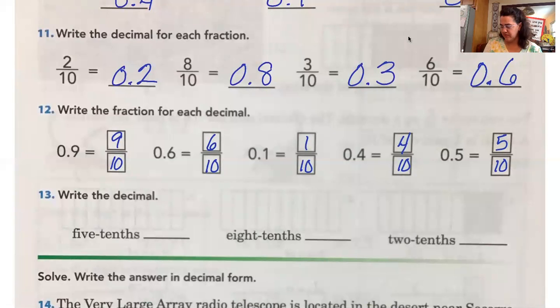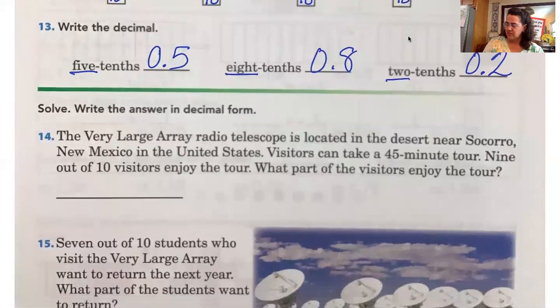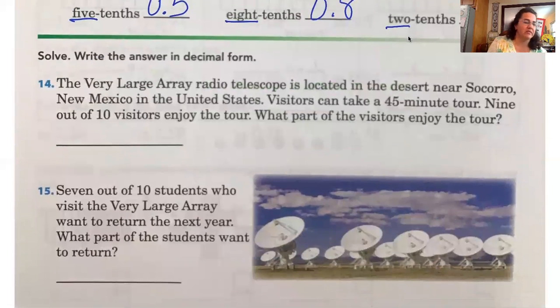Quincy. Write the decimal for five tenths. We are going to go 0.5. Good. Okay. How about this one Regan? 0.8. Good. What about this one Giovanni? 0.2. Good job. All right. Be ready. Problem solving path.